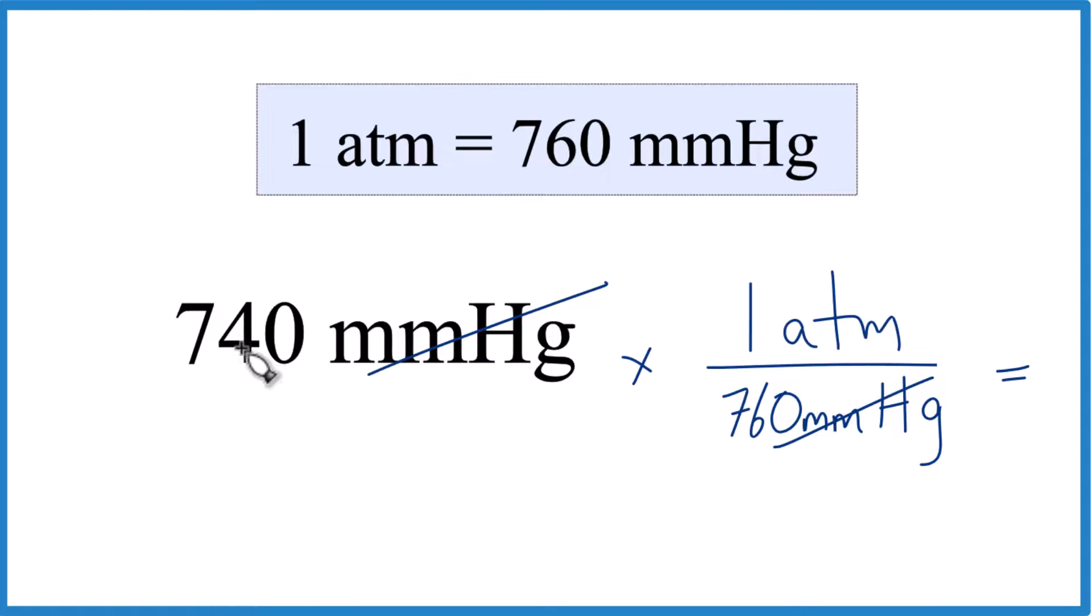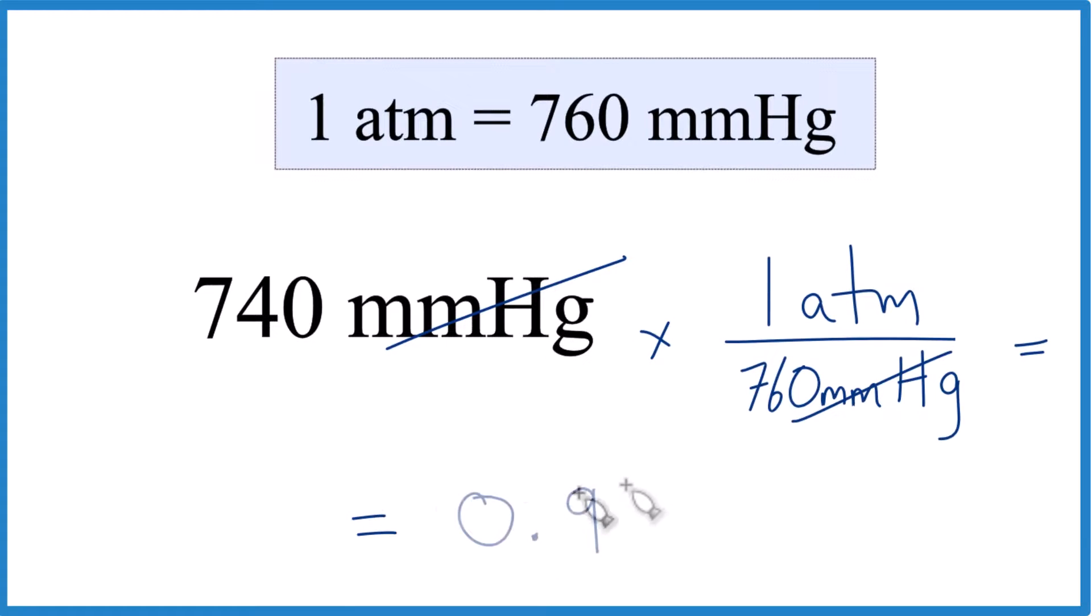Essentially we divide 740 by 760. We end up with 0.9736, or 0.974.